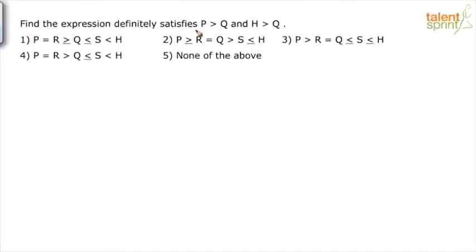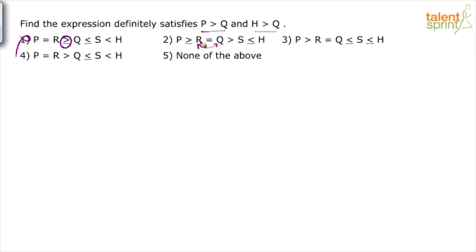The second question asks: find the expression that definitely satisfies P greater than Q and H greater than Q. In option 1, P equals R and R is greater than or equal to Q, giving P greater than or equal to Q — but we need strictly greater, so option 1 is wrong. In option 2, R equals Q, and P is greater than or equal to R, so P is greater than or equal to Q — again not strictly greater, so option 2 is wrong.